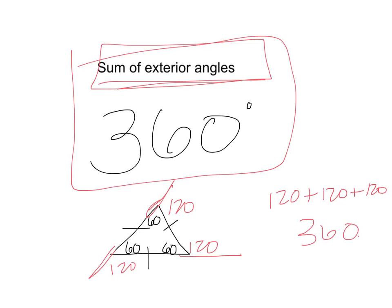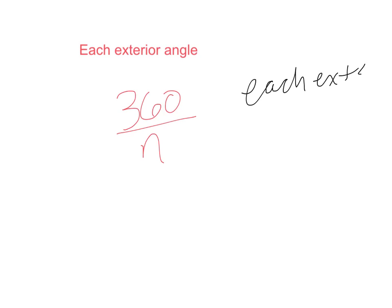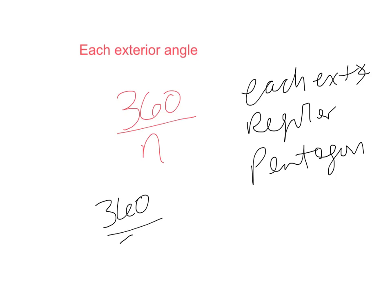The last formula for this unit is the following. I'm going to be looking for each exterior angle. Each exterior angle has a cool formula associated with it, and it's going to be 360 over n. So for example, if I wanted each exterior angle in a regular pentagon, then you would do 360 divided by 5, because there are 5 sides in a regular pentagon, and you get 72 degrees.